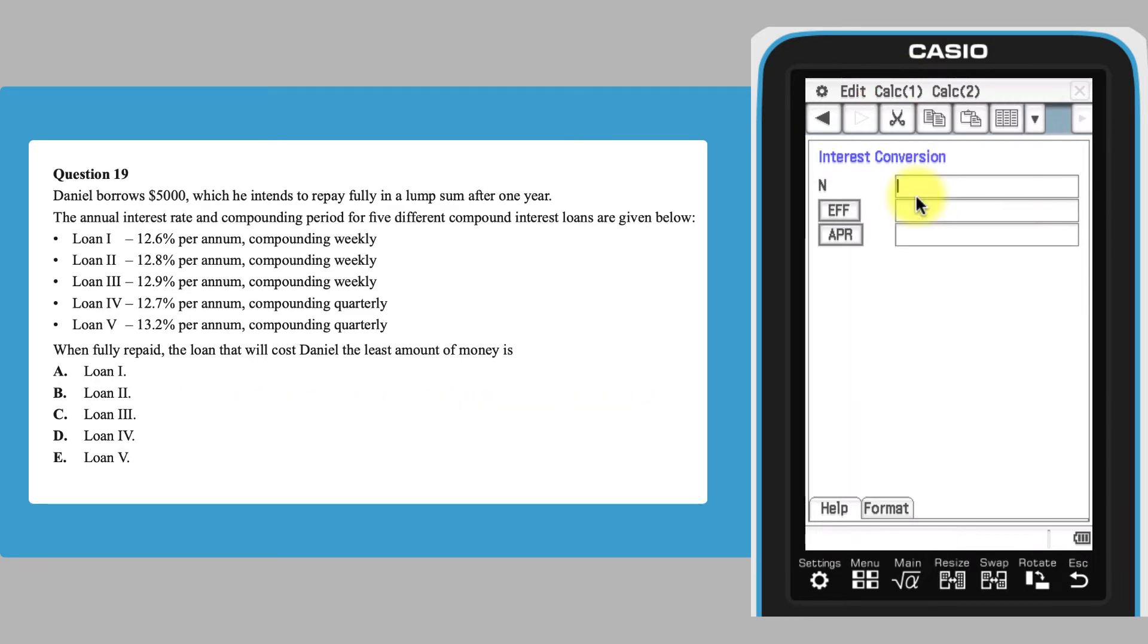The first loan to consider is a loan which is compounded weekly with the lowest nominal rate, which is Loan 1. The effective interest rate for this loan can be found by entering the number of compounds per year, which is 52 because it is compounded weekly, and the nominal interest rate, labelled APR as 12.6. Tapping EFF for effective interest rate gives a value of 13.4.